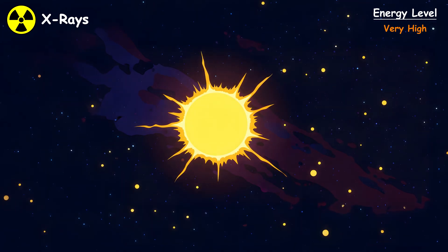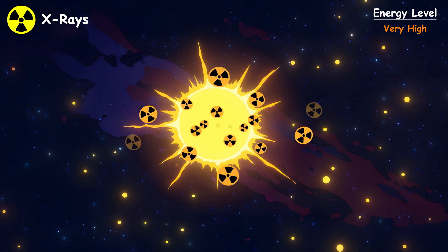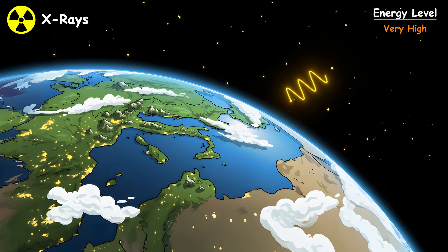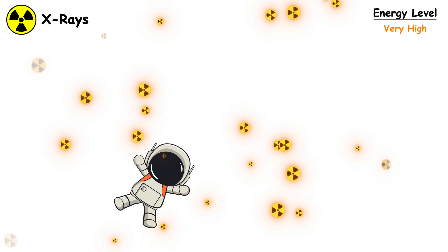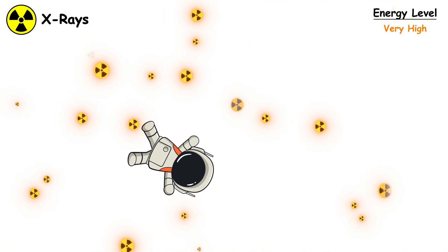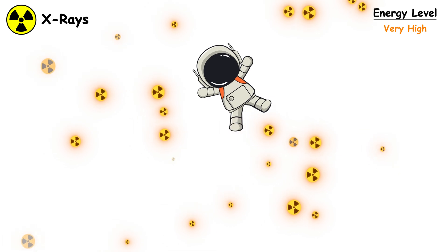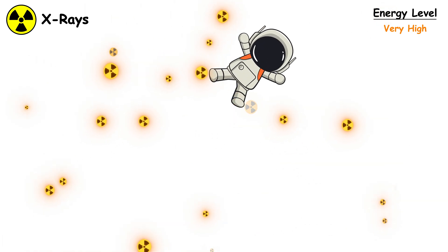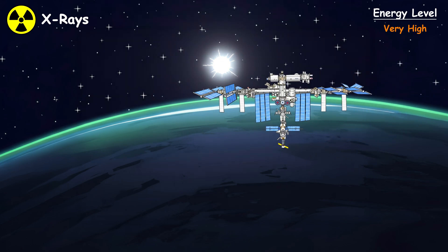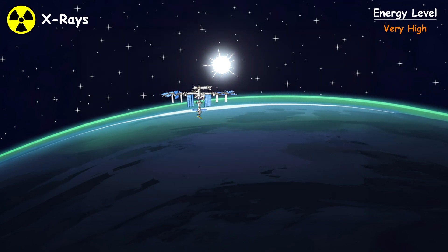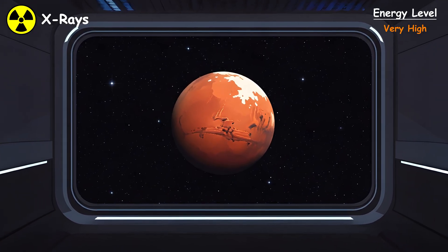During intense solar eruptions, X-ray output can increase by factors of thousands within minutes. These bursts hit Earth's dayside atmosphere, causing sudden disturbances that disrupt radio communications. Astronauts face serious hazards outside Earth's protective atmosphere. Spacecraft and space station shielding can only partially block solar X-rays. During major solar storms, astronauts must retreat to heavily shielded areas or risk acute radiation sickness, making Mars missions extremely dangerous without better radiation protection technology.